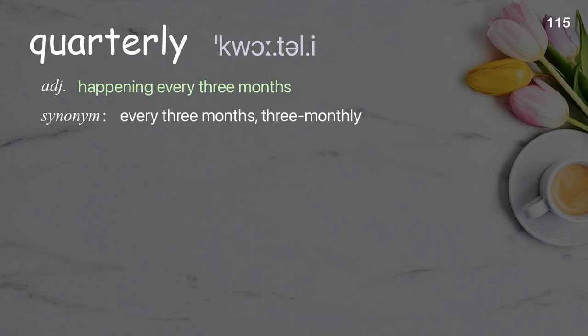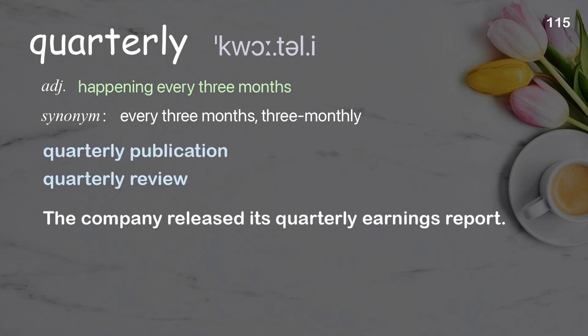Quarterly. Happening every three months. Examples: quarterly publication, quarterly review. The company released its quarterly earnings report.